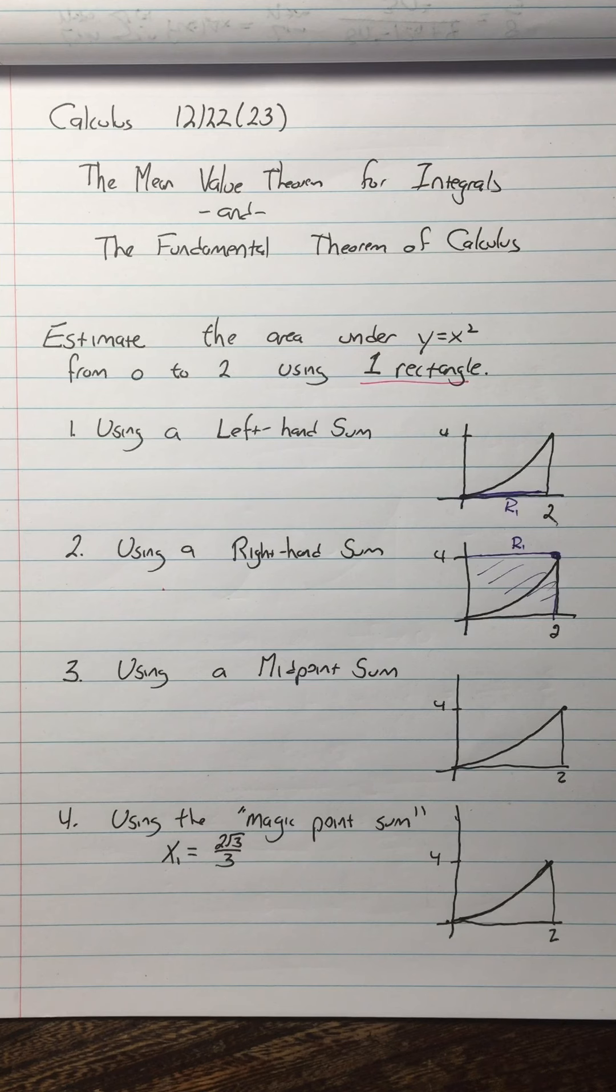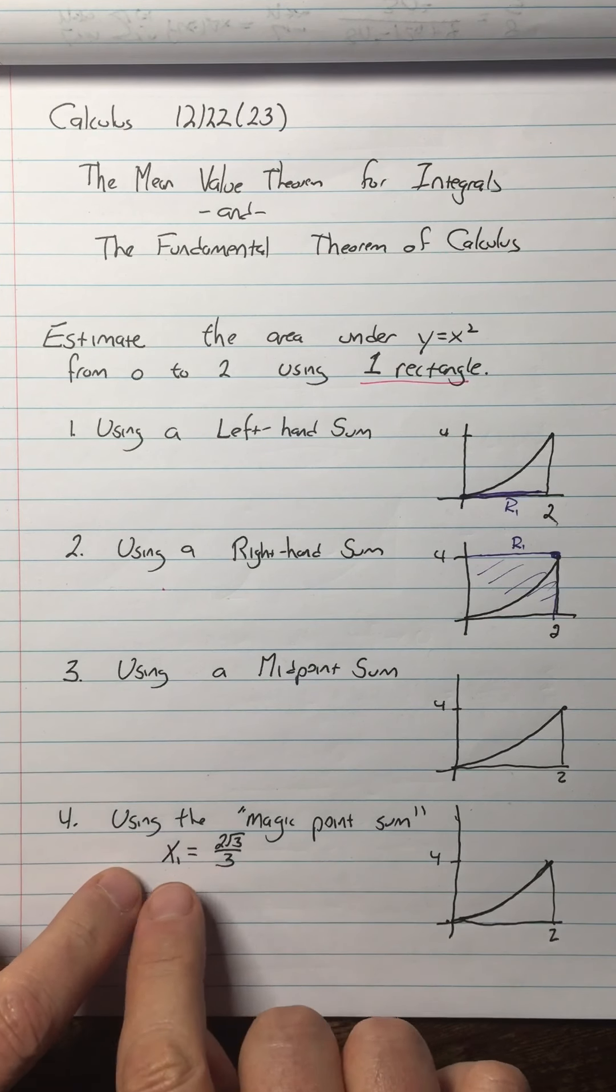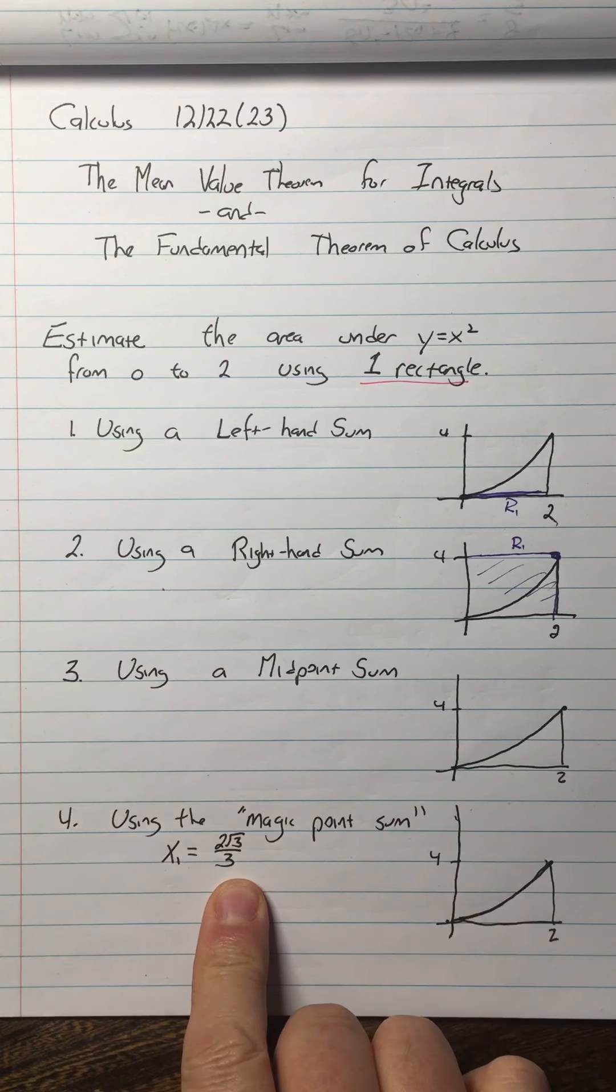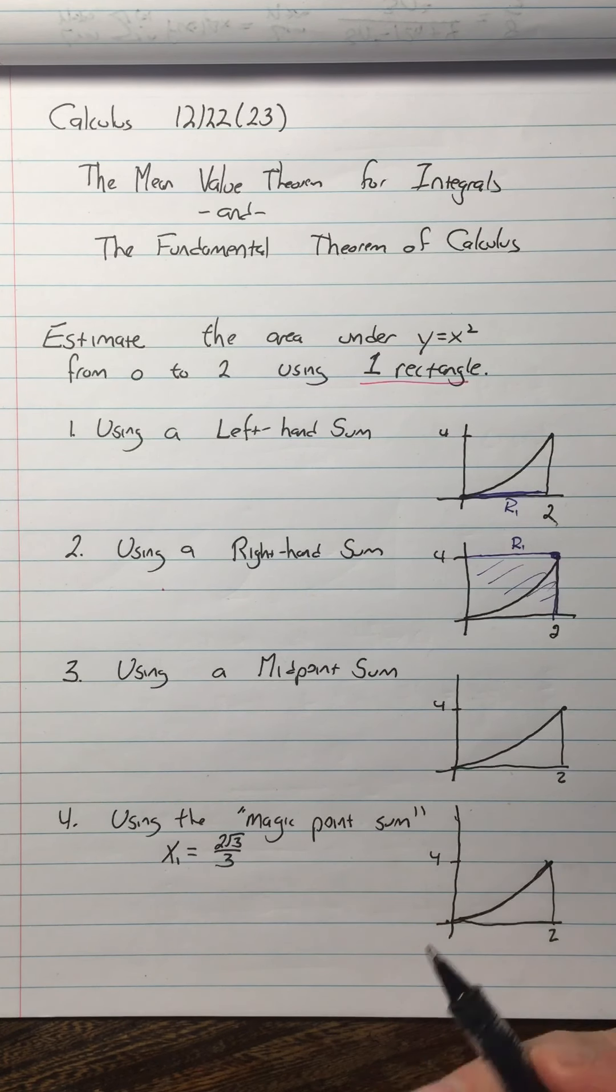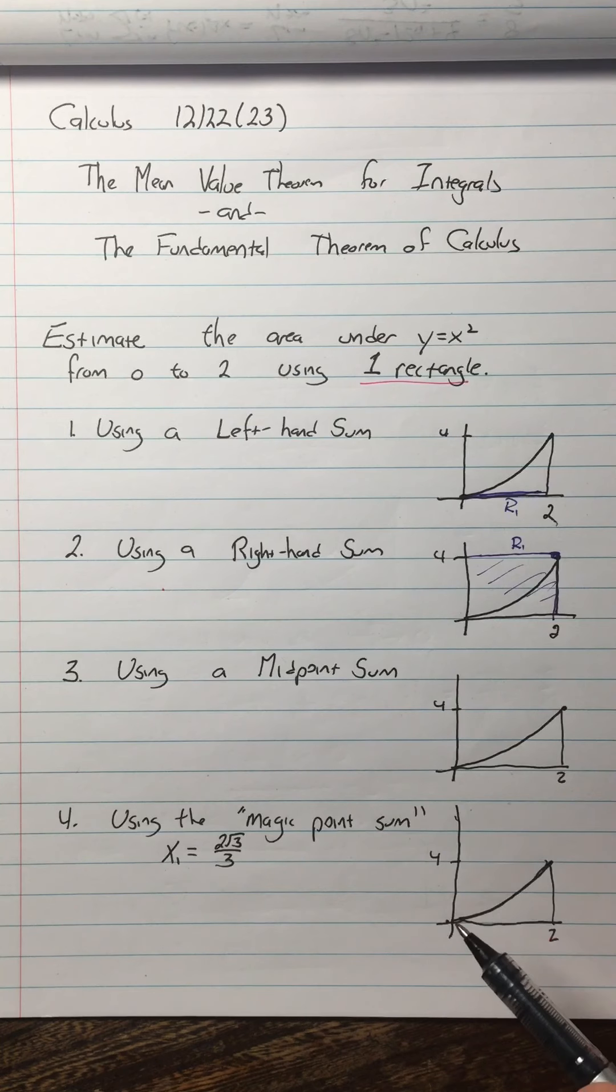But if I pay attention to what's going on here, I can understand what we mean by the x1 equals two square root three over three. So we usually, when I lay out these sums, we're going to have x1, x2, x3. That's our x sub i's, right?